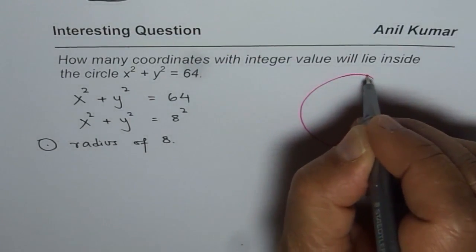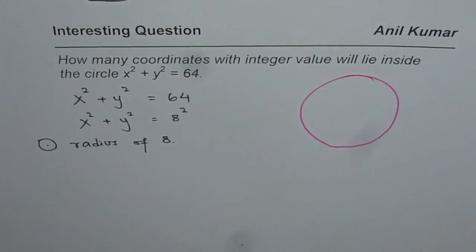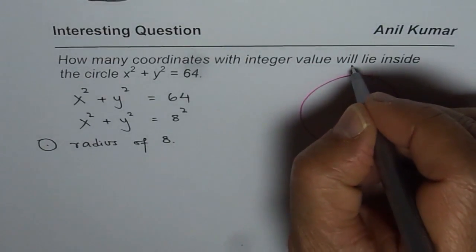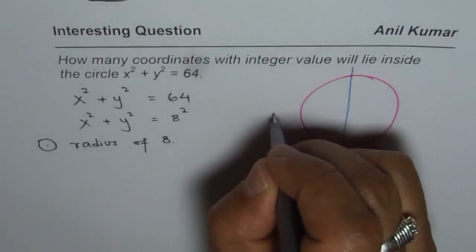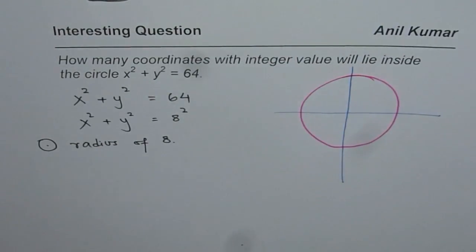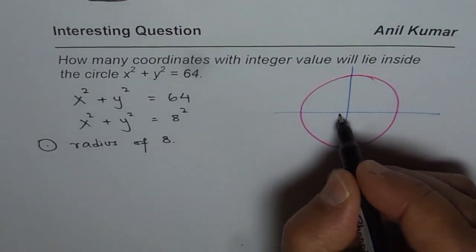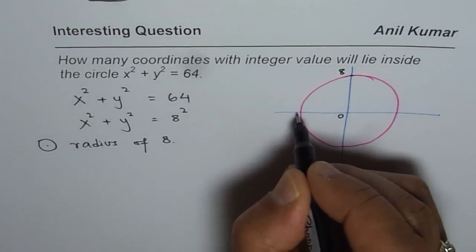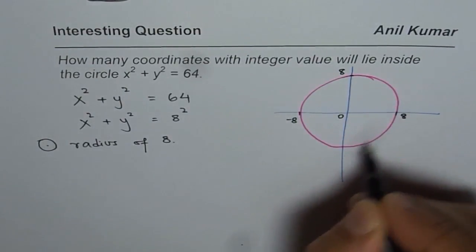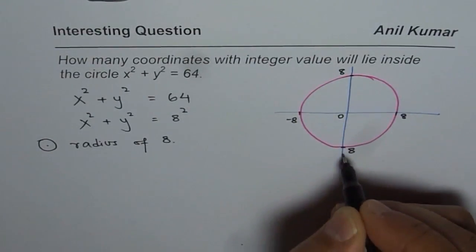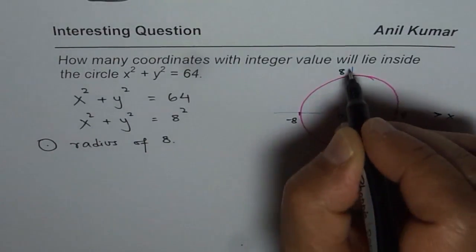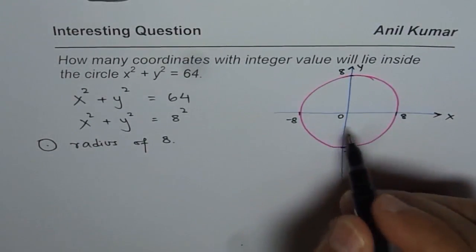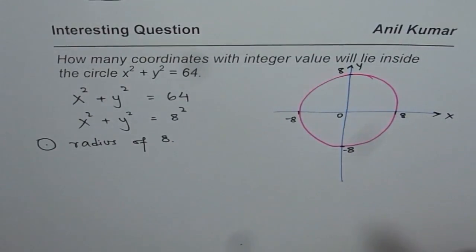Here is the solution. We have a circle with radius 8 units, centered at the origin (0, 0), with the extreme points at 8, -8 on both axes. Now you need to figure out how many points inside will have integer coordinates. You can pause the video, answer the question, and then look at my suggestion.